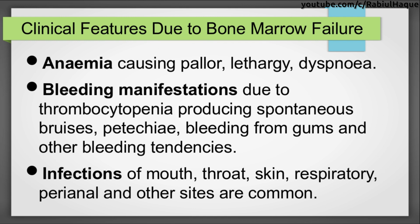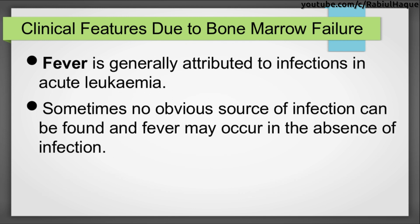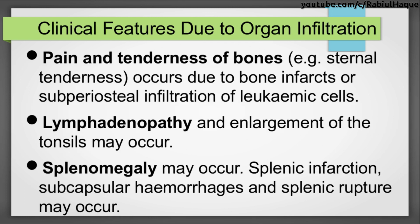Infections of the mouth, throat, skin, respiratory tract, perianal region, and other sites are common. Fever is generally attributed to infections in acute leukemia, though sometimes no obvious source of infection can be found and fever may occur in the absence of infection. Moving on to clinical features due to organ infiltration: there will be pain and tenderness of the bones, for example sternal tenderness due to bone infarcts and subperiosteal infiltration of leukemic cells.